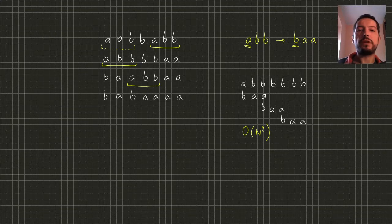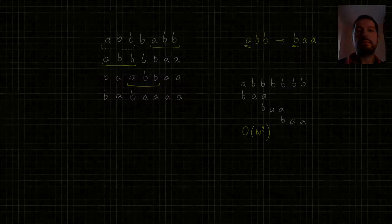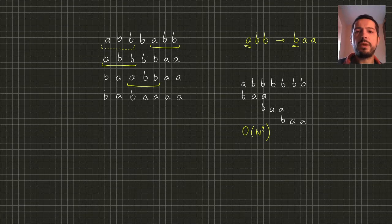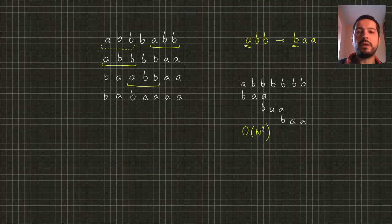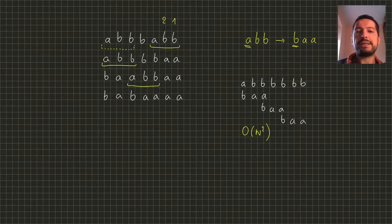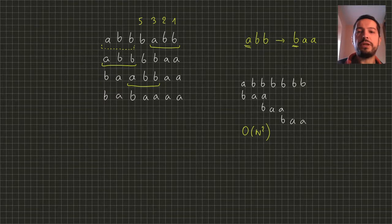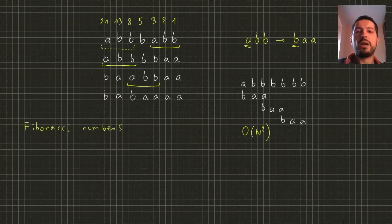So we have two things to do: prove that this algorithm is correct, and improve its time complexity. Let's start with the proof of correctness. For every position in the word, starting from right to left, we associate a number. On the rightmost position we put 1, on the second from the right we put 2, and on subsequent positions we put the sum of the two preceding numbers: so 3, then 5, then 8, then 13, then 21. You probably guessed these are the famous Fibonacci numbers.